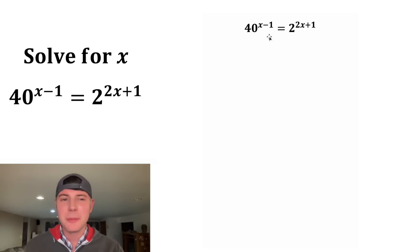Hey guys, this looks like a fun one. It says 40 to the power of x minus one equals 2 to the power of 2x plus one. If you want to try it on your own, pause it right now because I'm going to solve it in three, two, one.